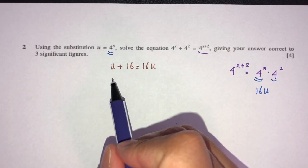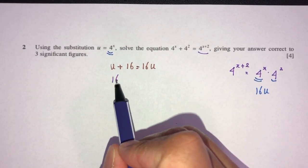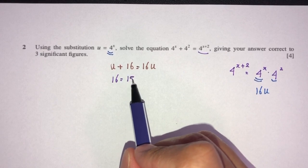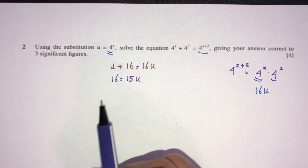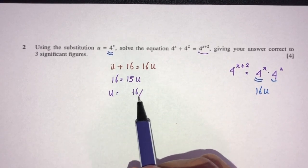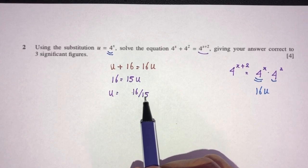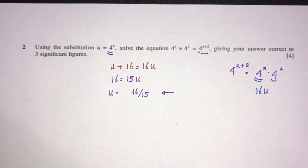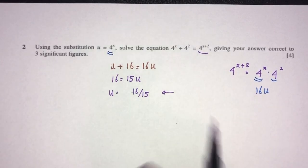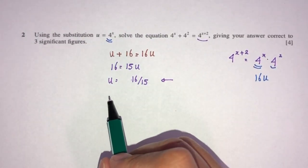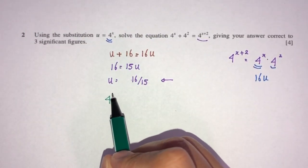So in this one, 16 minus u should be 15u. Therefore, u should be 16 divided by 15. But now we do not care about the value of u — we are trying to find the value of x, which is the unknown initially. So replace u back with 4 to the power x.